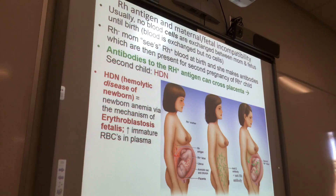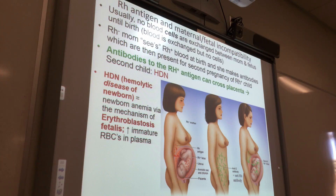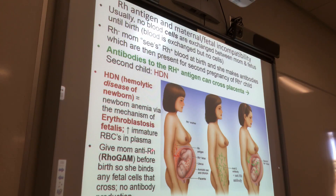What if this second fetus was Rh negative? Would that fetus get hemolytic disease of the newborn? No — it's going to be fine. Because the antibodies don't have anything to bind to. That second fetus has red blood cells that look like the mother's — no D antigen. And then you can give mom this anti-Rh antibody called RhoGam. If she takes RhoGam, then she just doesn't make the antibodies.